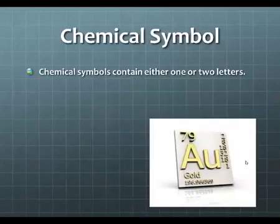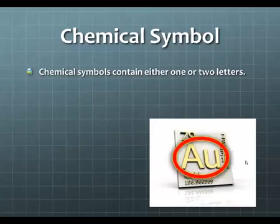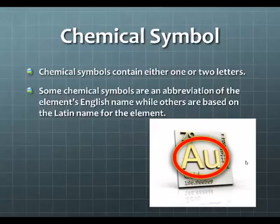Chemical symbol. Inside of your notes, you will see the box for gold. With that box, I want you to follow along, and I want you to do the same thing that I do inside of our notes here, inside this PowerPoint. I want you to circle and identify each thing as I do it inside this periodic table. So chemical symbols contain either one or two letters. Circle the chemical symbol and identify it as a chemical symbol. Some chemical symbols are an abbreviation of the element's English name, while others are based on the Latin name for that element. So obviously, AU is going to be based on the Latin name. If it were based on the English name, it would probably be either GD or GO.